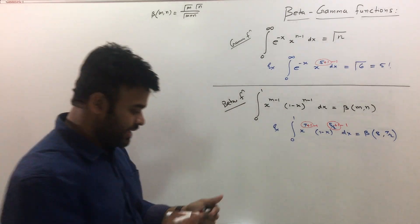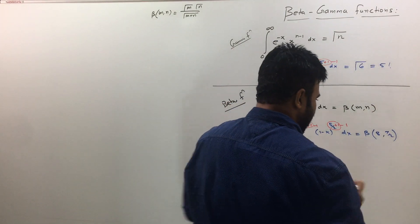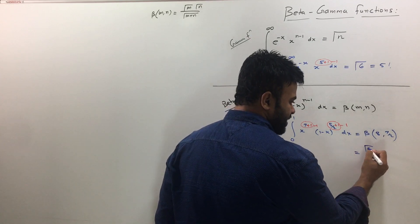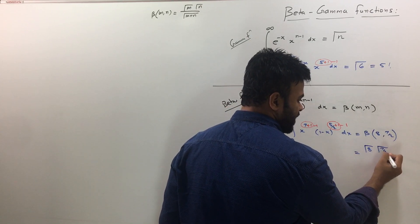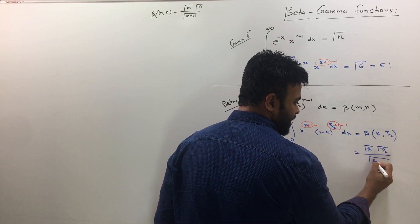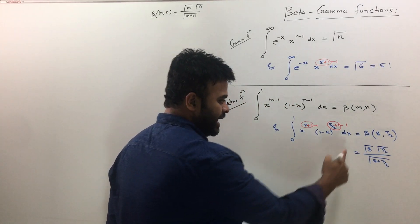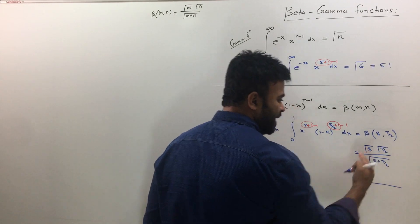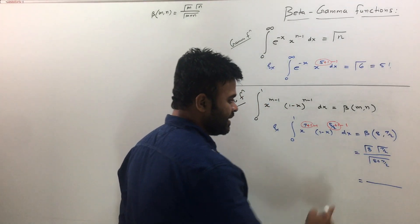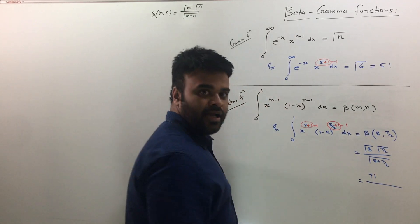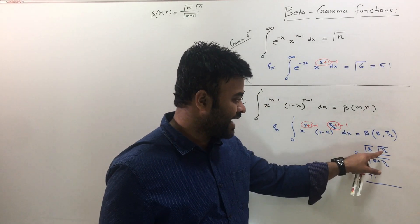Let's do that here. I have this as beta 8 comma 7 by 2 which will be gamma 8, gamma 7 by 2 upon gamma 8 plus 7 by 2. Now as I told you that if you have gamma 8, then I can simply write it as 1 less factorial, so that will be 7 factorial.